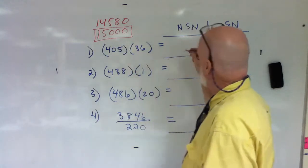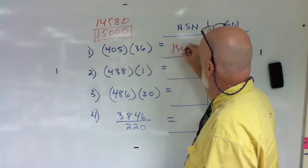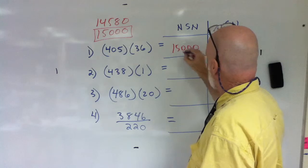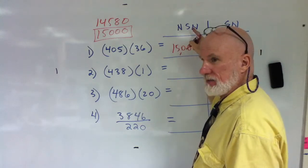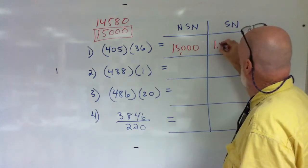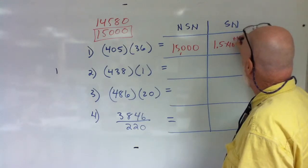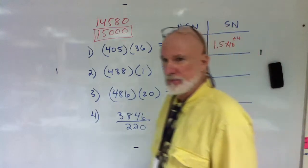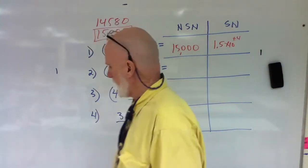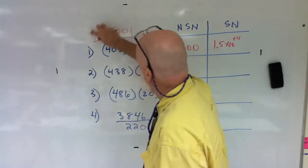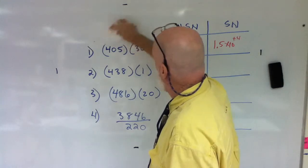So the answer is, that's with scientific notation. Scientific notation would be 1.5 times 10 to the positive four. Correct. Yes, with me? Okay, can we erase this? All right.